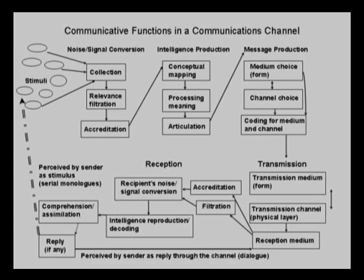Then all of this gets replicated at the receiver end. The receiver sees the transmission just like the transmitter does—as a stimulus. They need to accredit it, filter it for relevance, convert it into signal, reproduce their own intelligence as to it, comprehend it, assimilate it, and ultimately create a reply or simply say something into the world that ends up either being a dialogue, if it returns through the same channel, or thrown into the world of stimuli—as, for example, broadcasters do. The reply to broadcasters usually gets embedded in Nielsen ratings, that is to say, in general stimuli in the population.